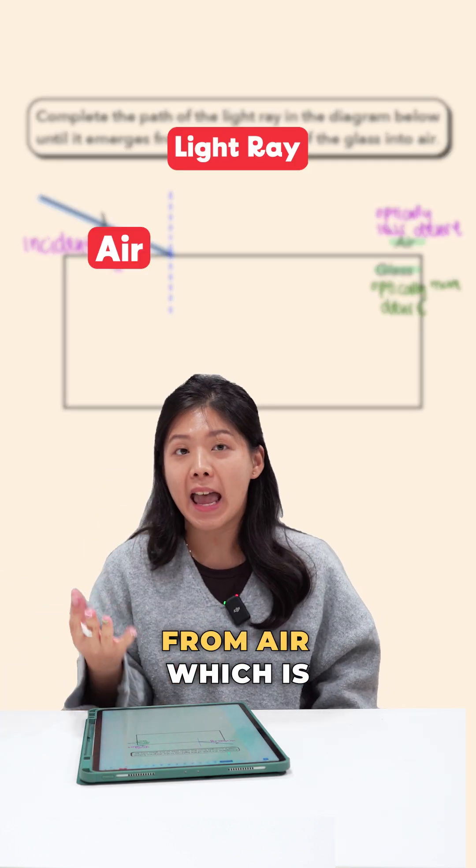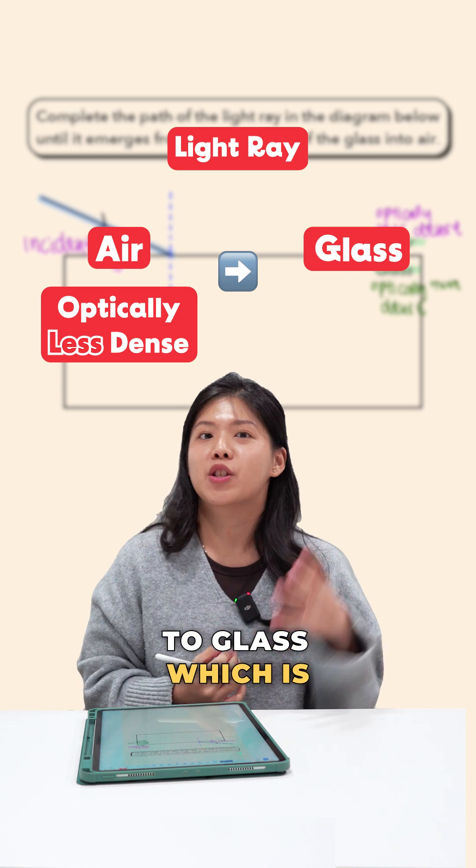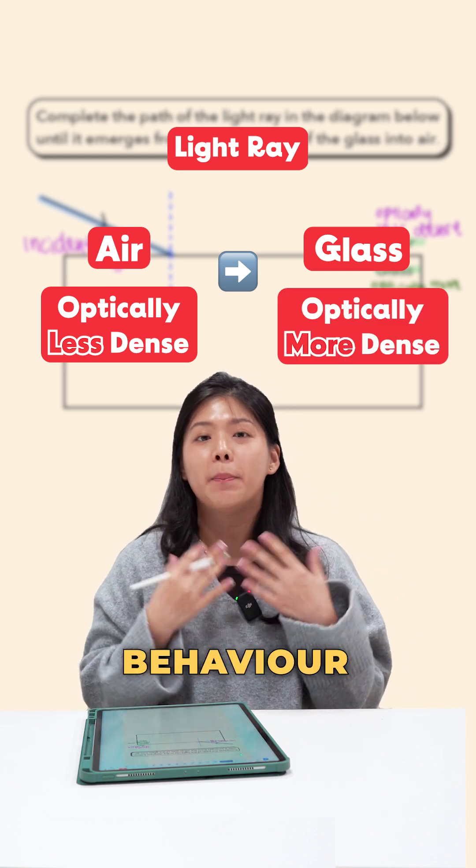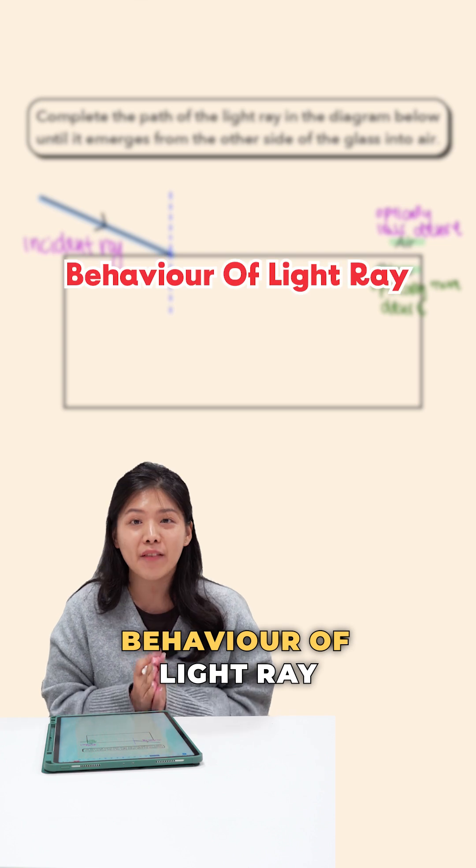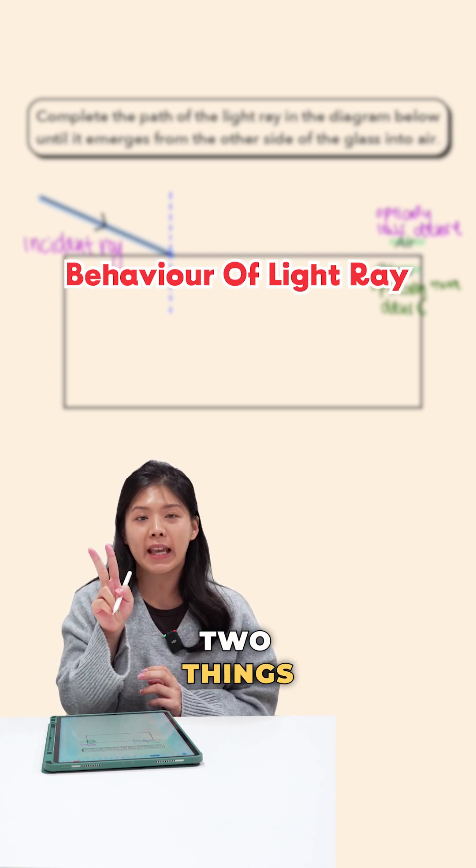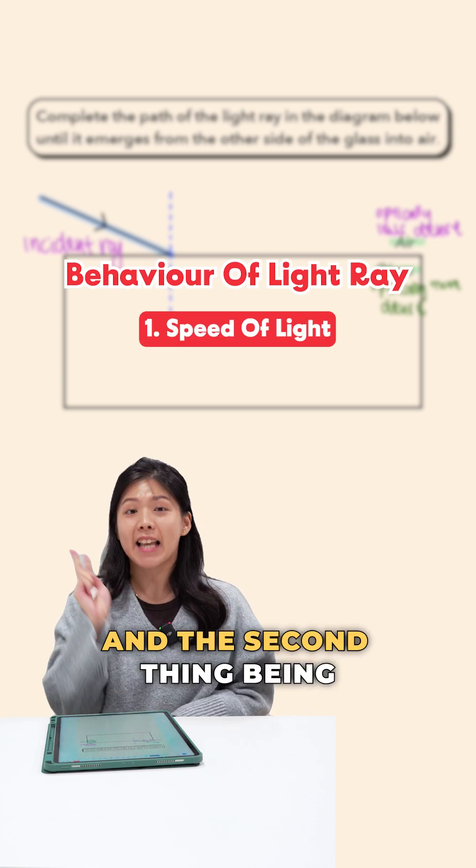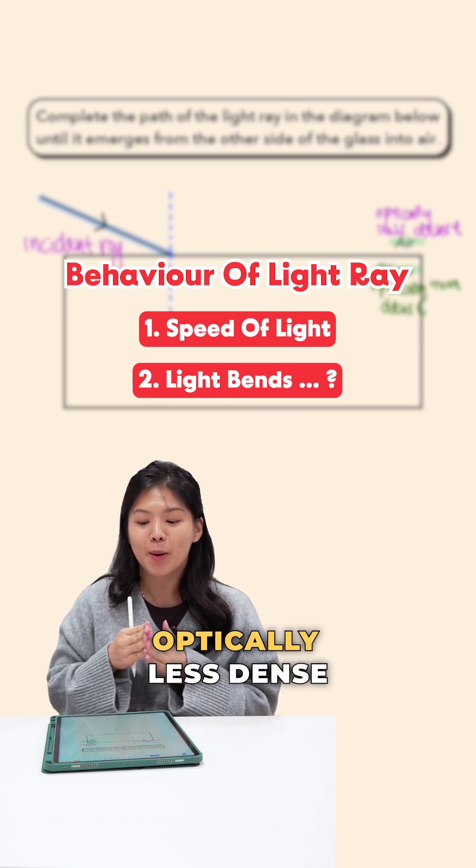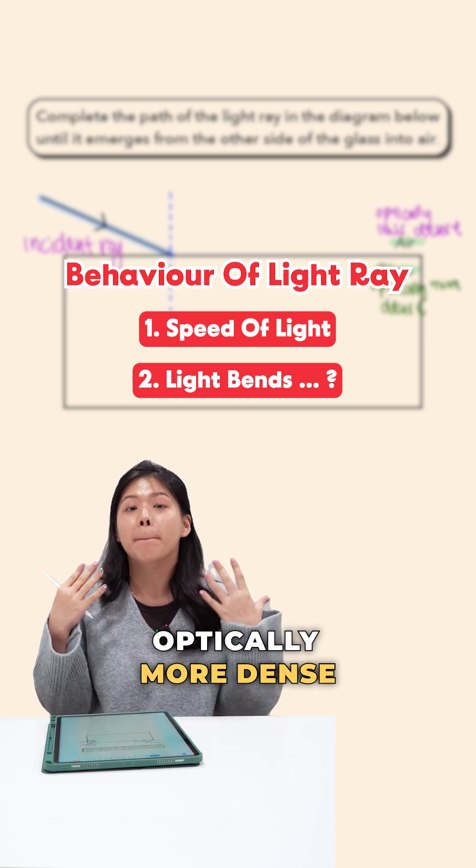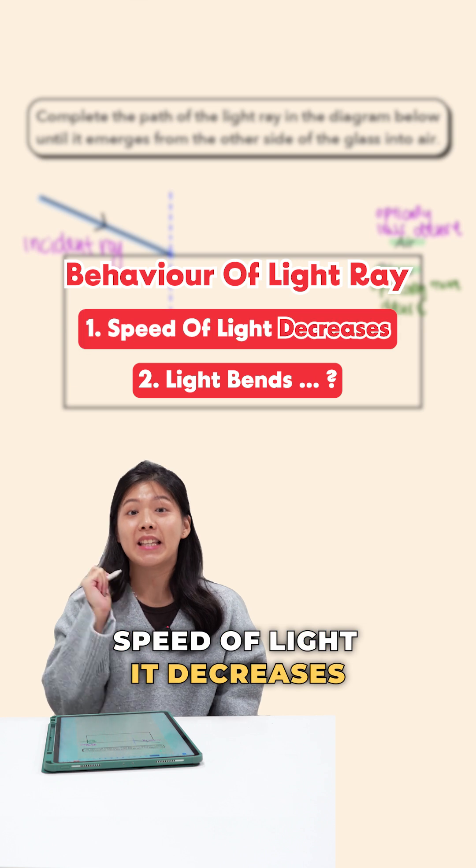As my light ray passes from air, which is optically less dense, to glass, which is optically more dense, what happens to the behavior of the light ray as it enters the glass block? When we talk about behavior of light ray, we always talk about two things: the first being the speed of light, and the second being where the light ray bends. As we are entering from air to glass, we say that the speed of light decreases.